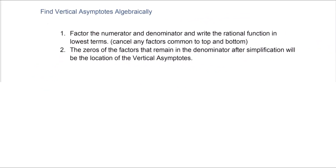To find vertical asymptotes algebraically, we first factor the numerator and denominator and write the rational function in lowest terms — that is, we reduce any factors common to the top and bottom. Step 2: the zeros of the factors that remain in the denominator after simplifying will be the location of the vertical asymptotes.